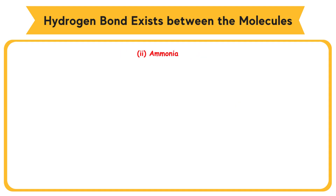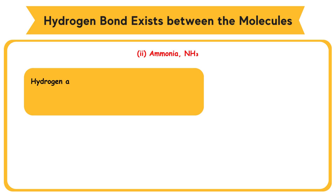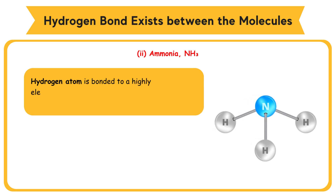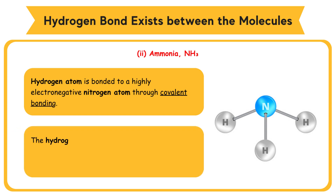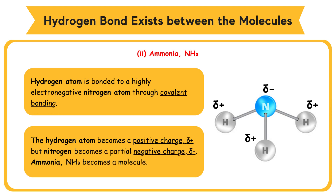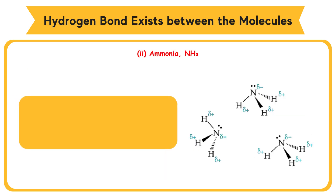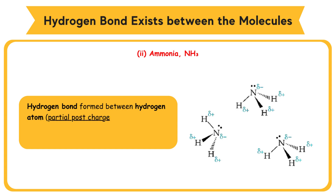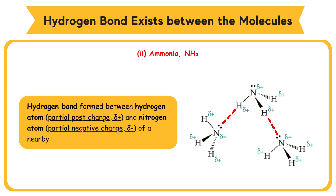Ammonia, NH3: the hydrogen atom is bonded to a highly electronegative nitrogen atom through covalent bonding. The hydrogen atom becomes a partial positive charge, while nitrogen becomes a partial negative charge. Ammonia, NH3, becomes a dipole molecule. Hydrogen bond is formed between the hydrogen atom, partial positive charge, and the nitrogen atom, partial negative charge, of a nearby ammonia molecule.